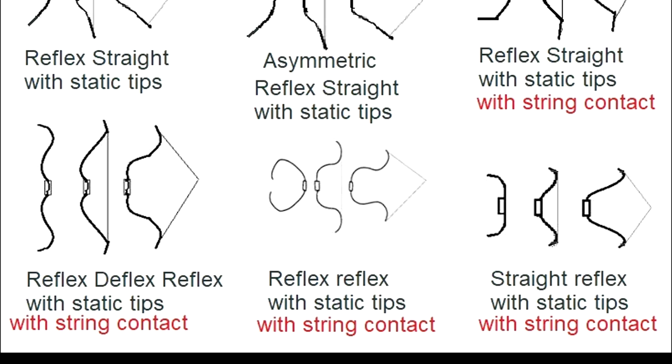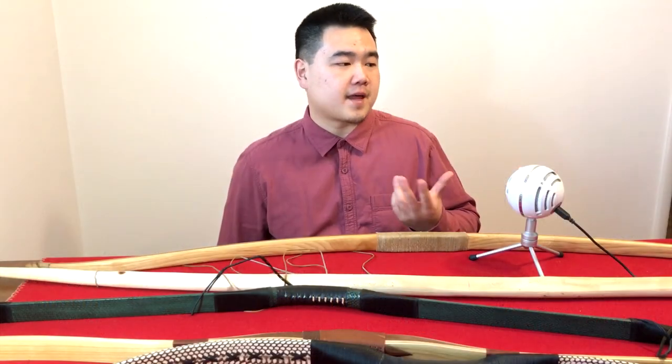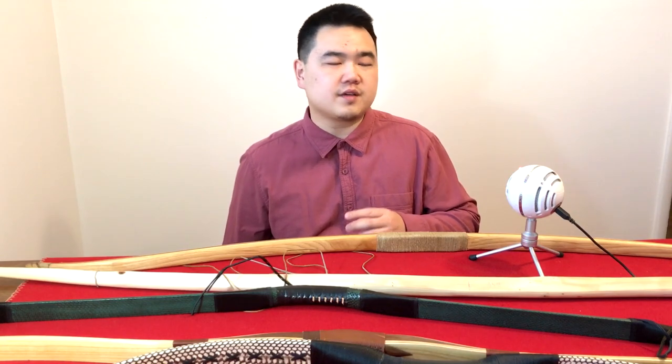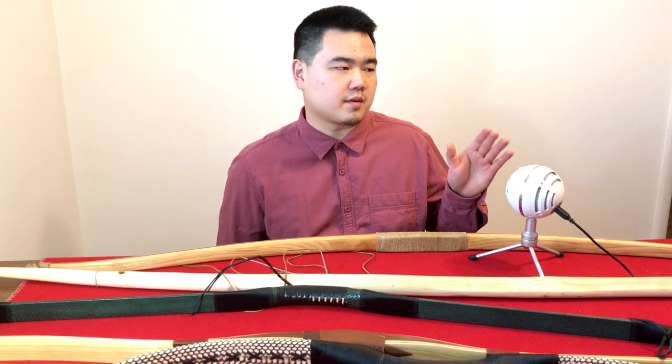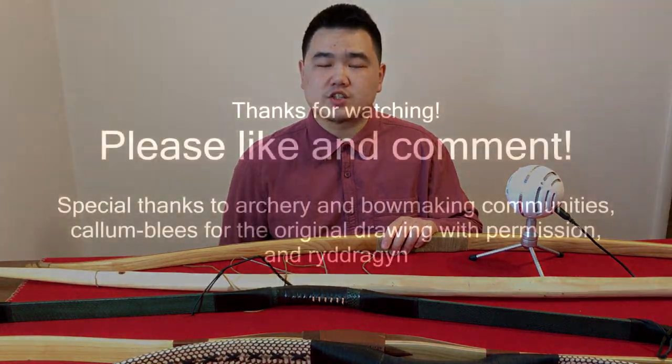You also have straight-reflex with static tips and straight-reflex with handle-straight with static tip bows. Both of these are commonly seen in Turkic and Persian cultures, especially during the medieval period and later. There are plenty of other examples I didn't include, such as the Japanese Yumi, which are quite complicated. I believe they're asymmetric reflex-straight-reflex, but it depends on the specific Yumi. There are also examples where the top limb is a completely different shape from the bottom limb, but these are so rare I'm not too worried about it. I think I've got most of the historical bows covered — let me know if I'm missing some or have made mistakes. Thank you very much for watching. This is Jack from Historical Archery.